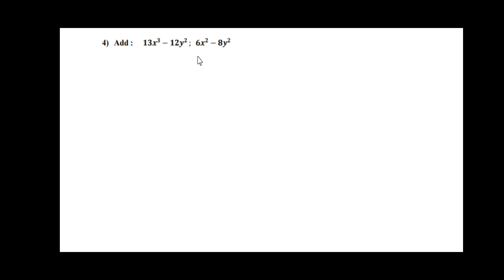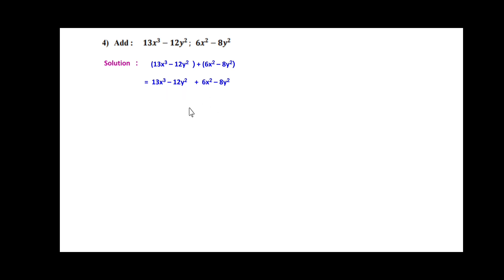Problem number four: add the two polynomials 13x³ − 12y² and 6x² − 8y². Writing them together: (13x³ − 12y²) + (6x² − 8y²). Removing the brackets: 13x³ + 6x² − 12y² − 8y². The terms 13x³ and 6x² are unlike terms and stay as is. The like terms −12y² and −8y² are added to give −20y². The result is 13x³ + 6x² − 20y².